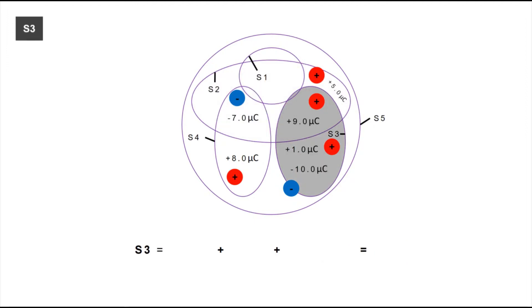S3 is now represented by the gray part again. There are three charges enclosed in that surface, so we are going to add them up. The result will be 0 µC.